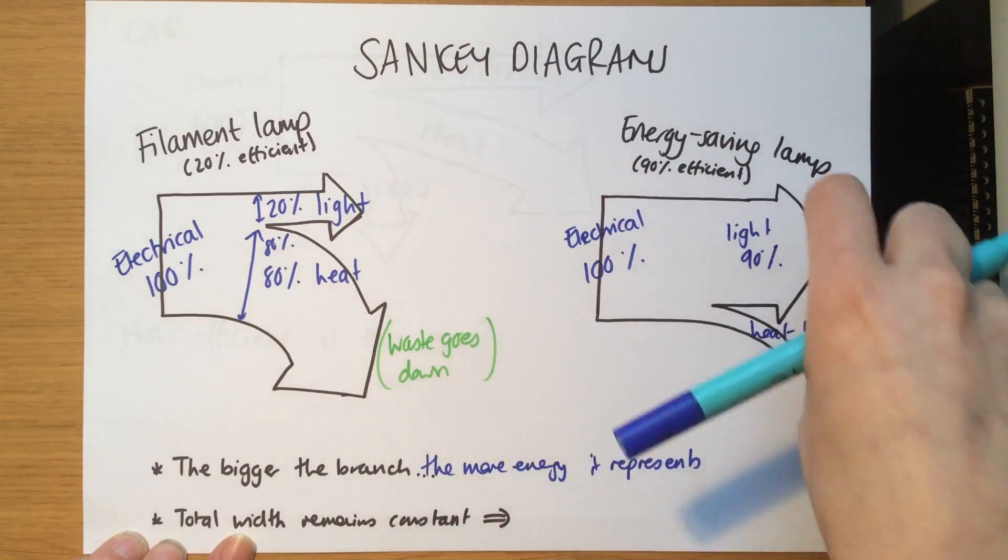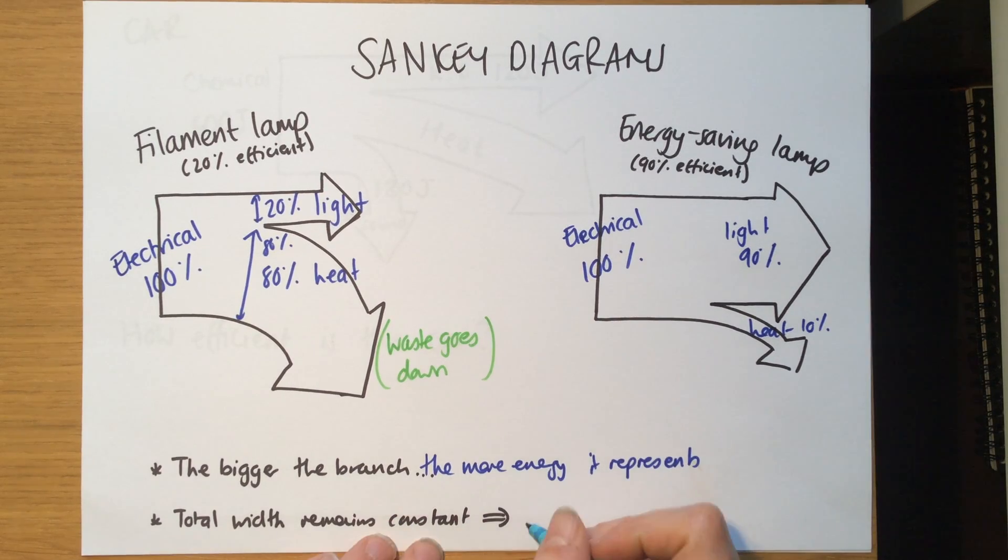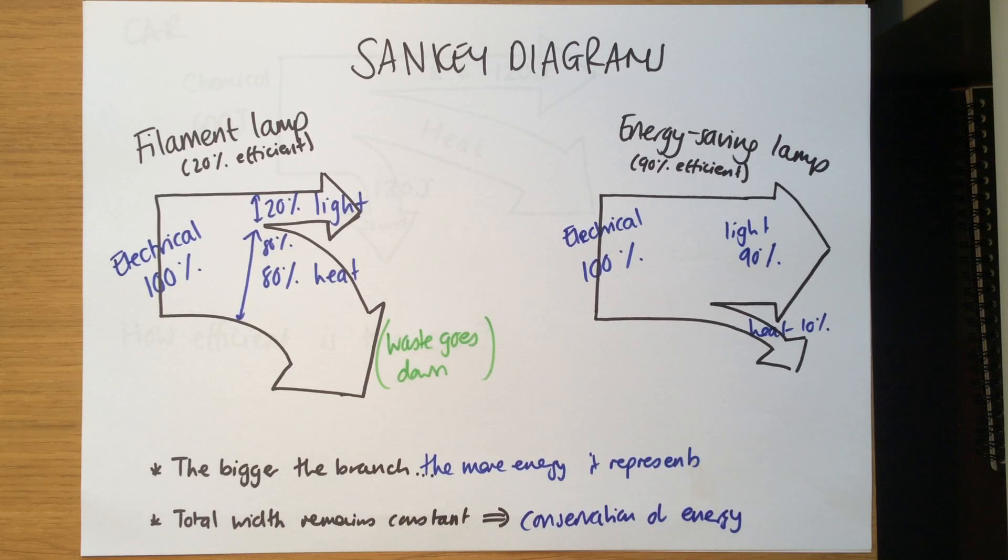Now the total width remains constant. If I had a 100 percent efficient light bulb it just goes straight across, or if I added that into there it should be about the same width. That's because it's telling us that energy can't be created or destroyed. It's the conservation of energy, you might have heard it before. You can't make energy out of thin air, it can't just disappear. It has to be converted. A lot of it's converted as waste which we know, but it can't just disappear out of thin air.